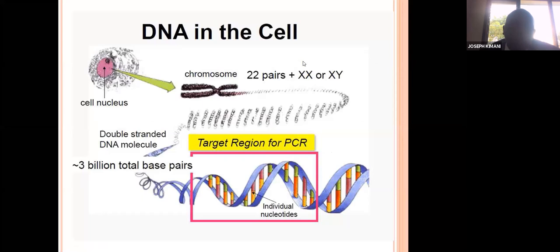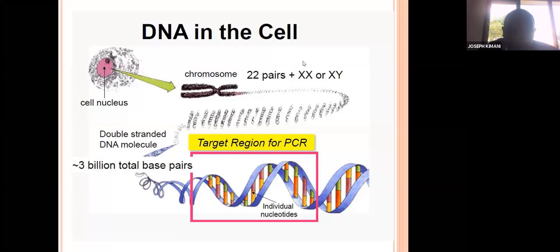DNA in the nucleus is not free DNA. It is packaged into chromosomes — thread-like structures — where it is compacted by histone proteins to form what we call chromatin. A normal somatic cell has 46 chromosomes, including the sex chromosomes and autosomes, and that forms the basis of forensic DNA work.